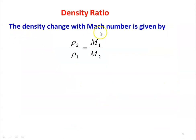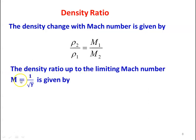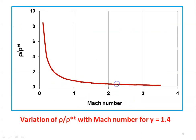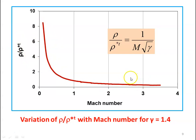Then the density ratio: ρ2/ρ1 = M1/M2. The density ratio up to the limiting Mach number M = 1/√γ is given by ρ/ρ*T = 1/(M√γ), where ρ*T is the density at the choking condition in isothermal flow. The plot of ρ/ρ*T with respect to Mach number is shown for γ = 1.4.